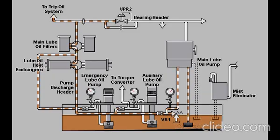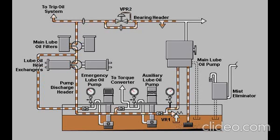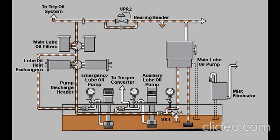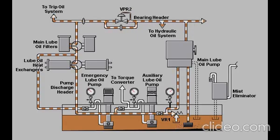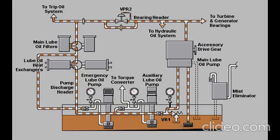VPR2 maintains oil pressure in the bearing header at approximately 26 PSI. The bearing header then supplies filtered lube oil to the hydraulic oil system, accessory drive gear, and the turbine and generator bearings.